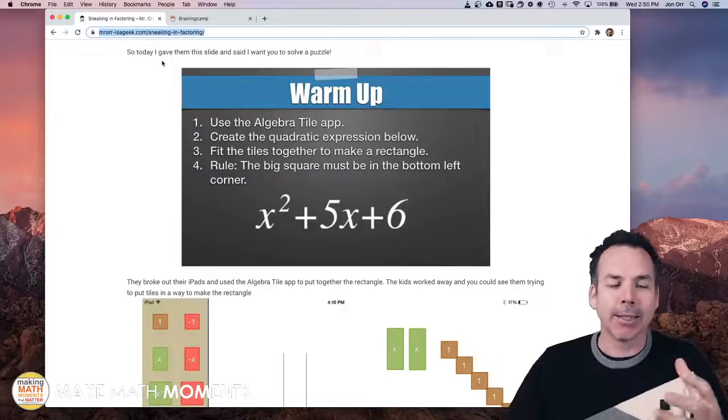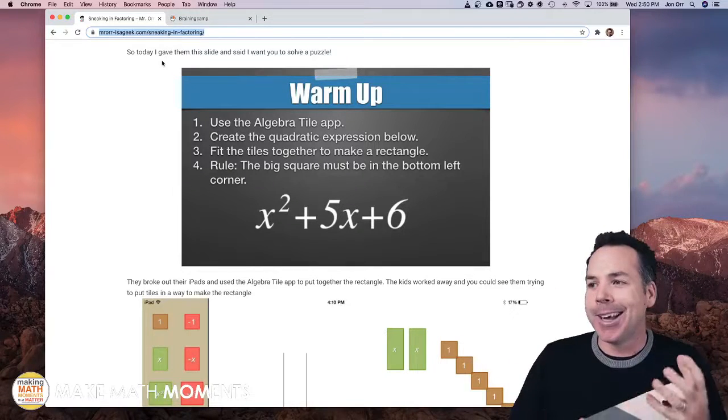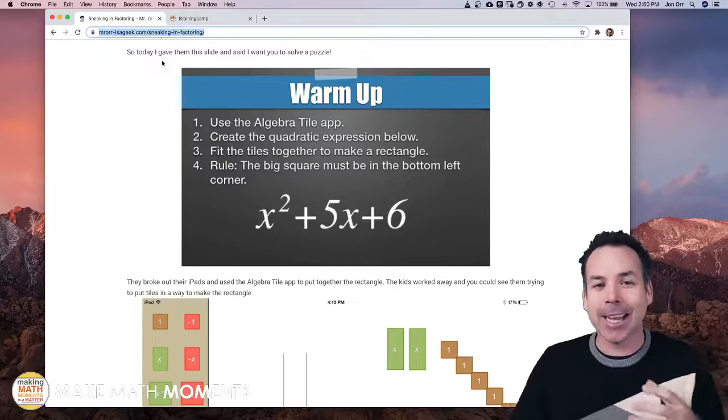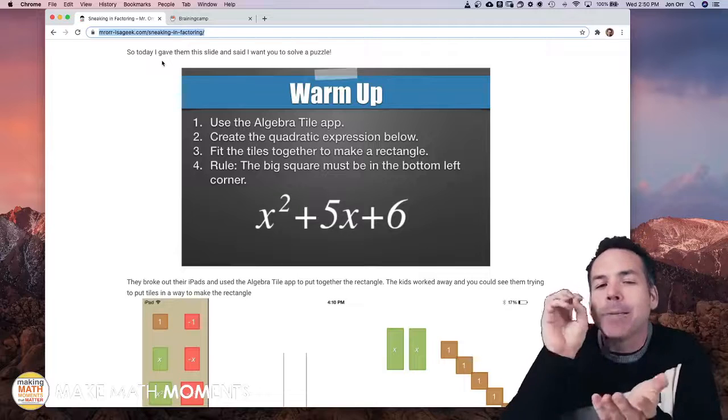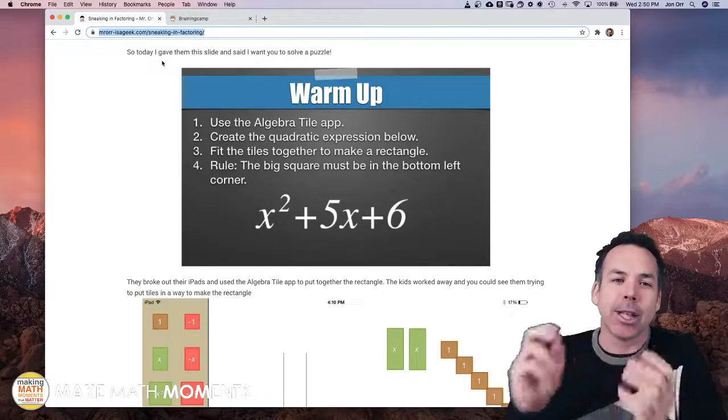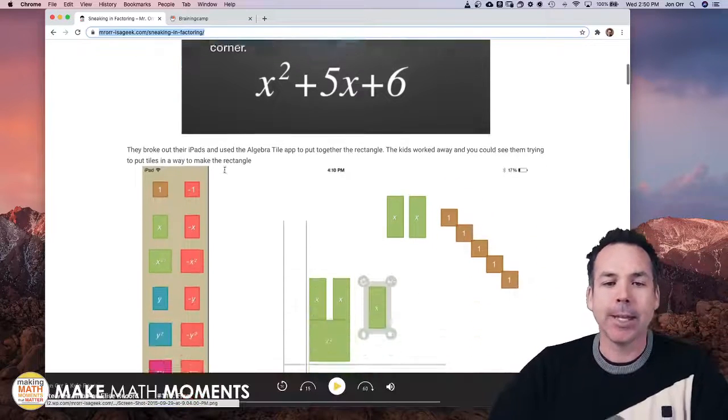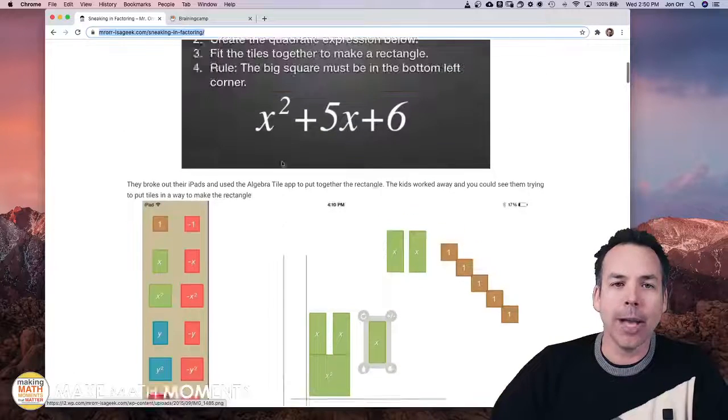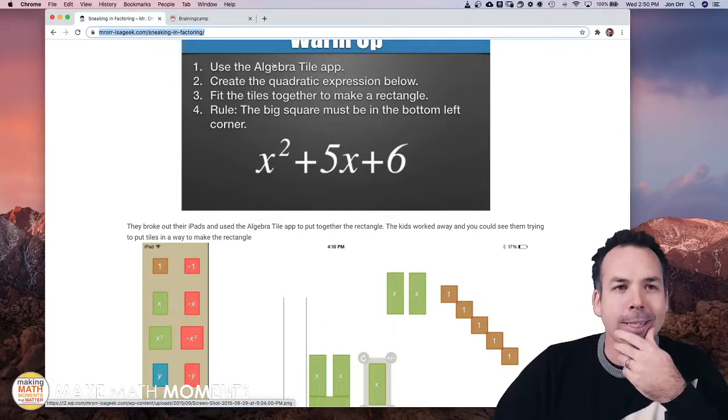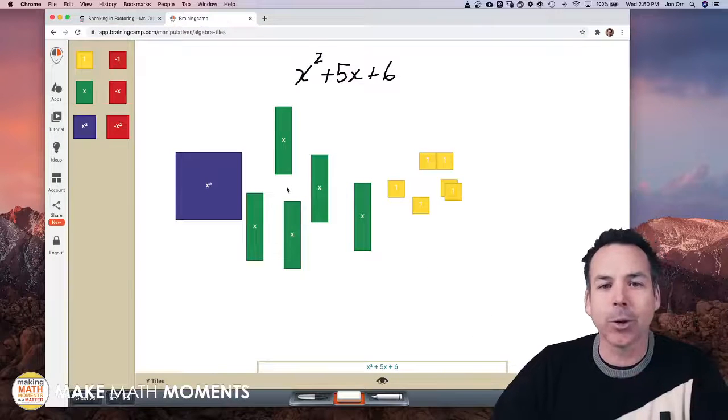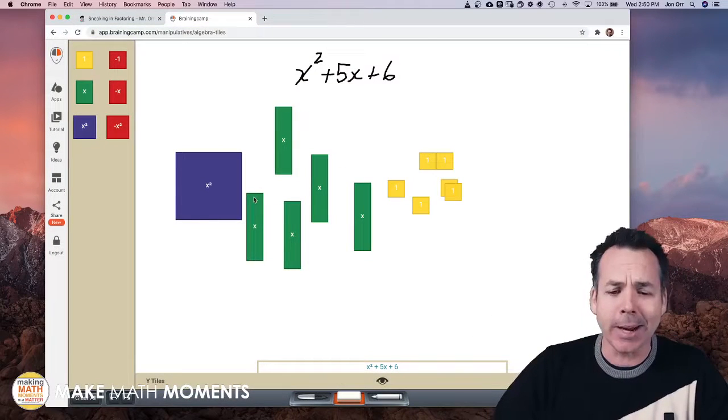What's going to happen here is students are making rectangles and actually they're factoring. As long as you kind of pull some tidbits out of there as they go. For example, in this particular one I might say hey go ahead put an x squared tile, put five x tiles and put six singles down on your workspace here. All you want to do here is make a rectangle.